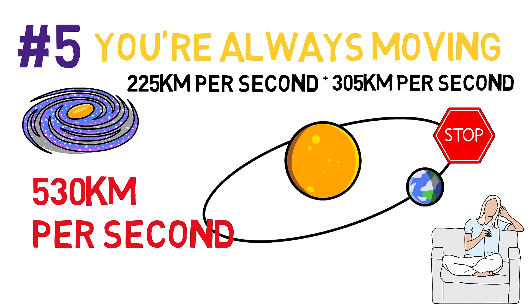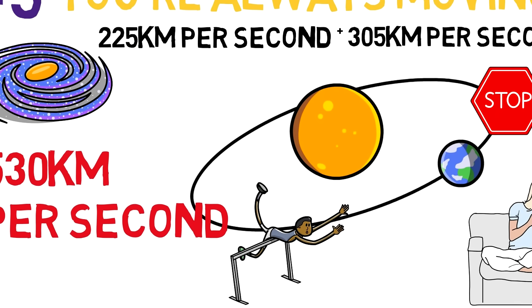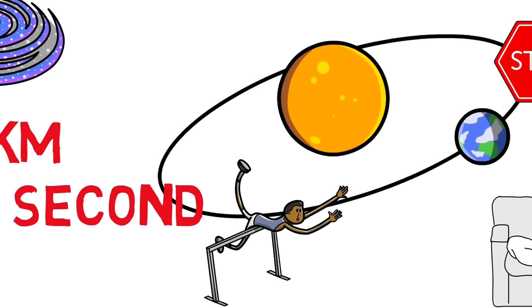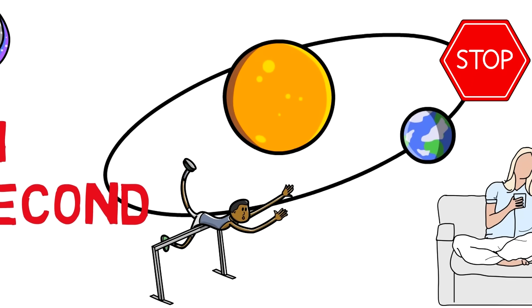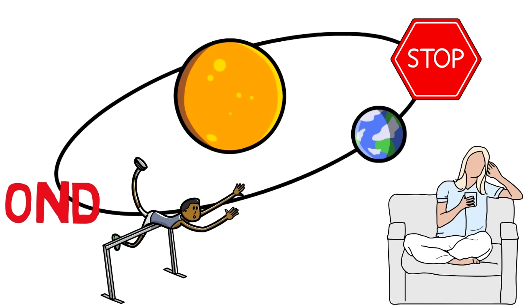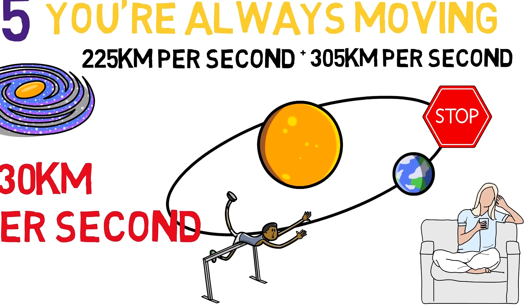If the earth were to stop rotating, for instance, we would be launched forward or backwards at an insanely high speed. So, if anyone ever tells you that you never go anywhere, you can just tell them that you're racing through space.